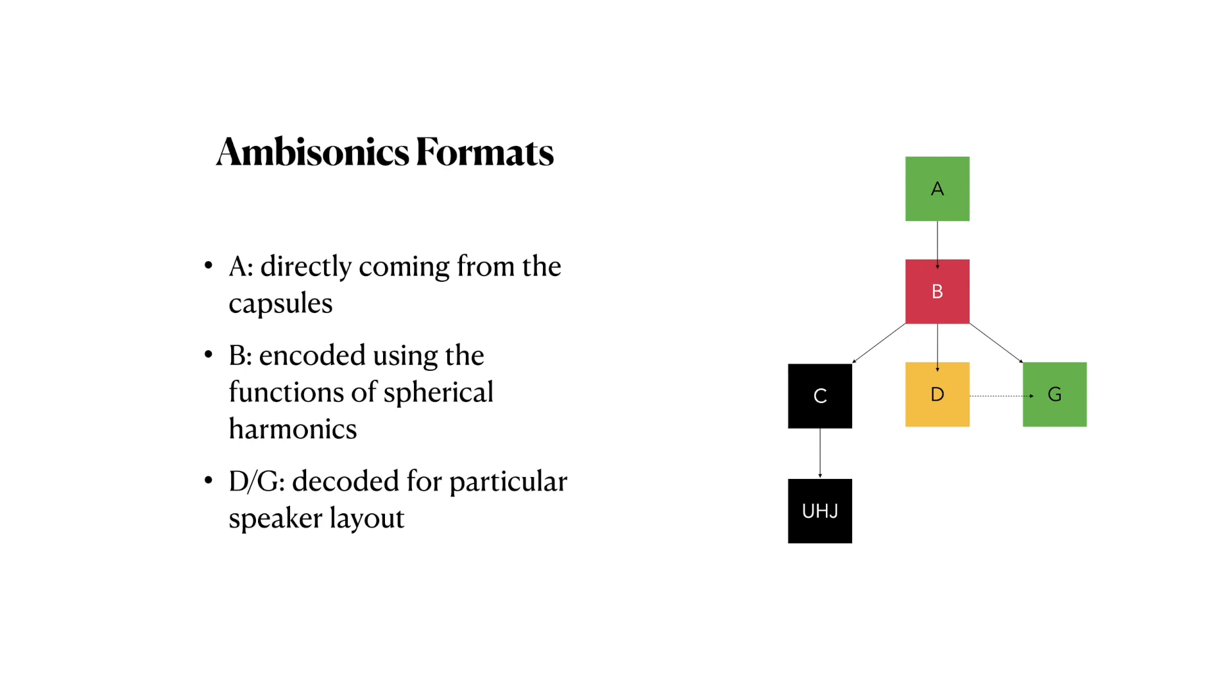And then there's also the A-format. The A-format includes all the signals from the microphone capsules of an ambisonics microphone. A first-order ambisonics microphone will often consist of four different microphone capsules. To ensure that we can use these signals in our workflow, we have to encode our A-format into a B-format, and the manufacturers of the microphones will often provide their own plugin for that.